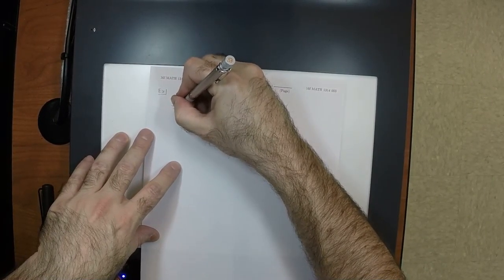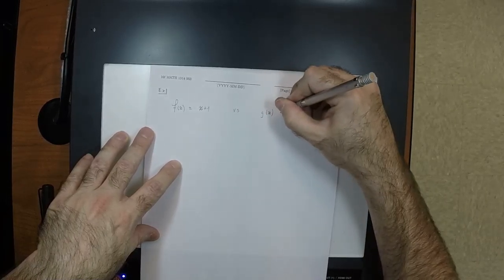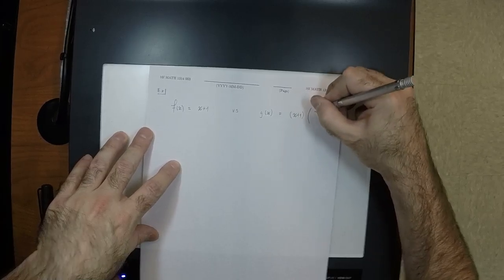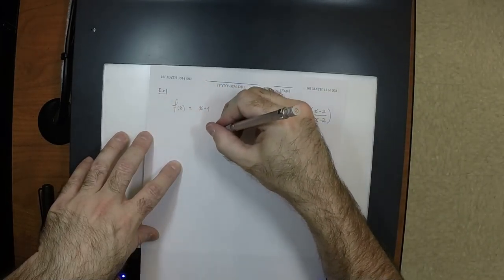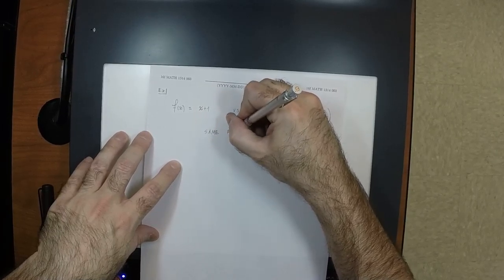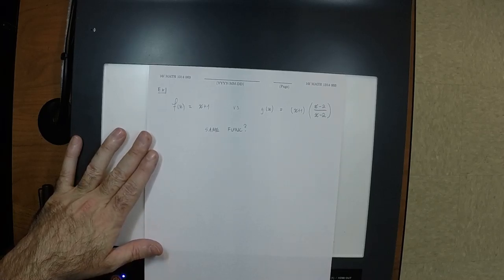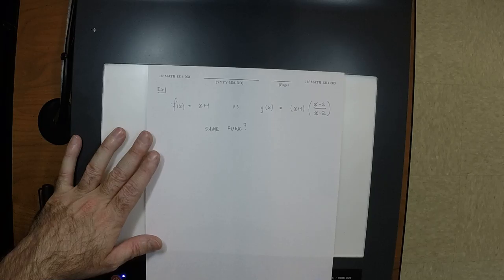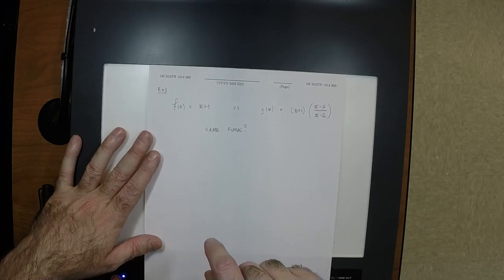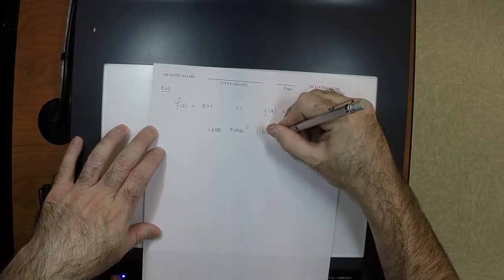Last thing for today: here are two functions. f of x equals x plus 1. And g of x equals x plus 1, multiplied by x minus 2, divided by x minus 2. Are these the same function? No, they're not. Why? They have different domains. What is not in g's domain? 2.